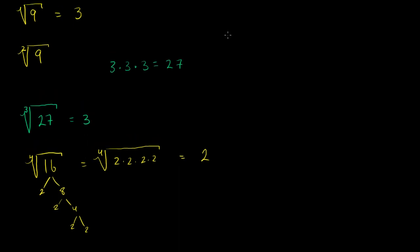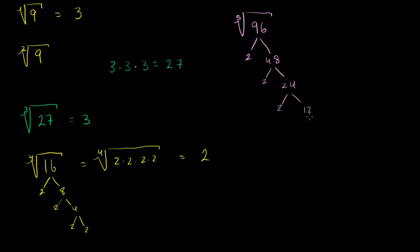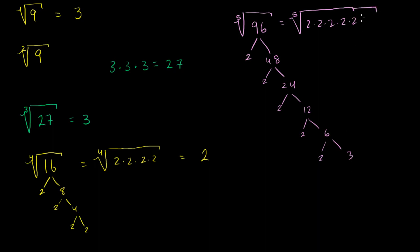We've simplified traditional square roots before; now we should be able to simplify radicals with higher power roots. Let's try to simplify the fifth root of 96. Let's factor 96: 96 is 2 times 48, which is 2 times 24, which is 2 times 12, which is 2 times 6, which is 2 times 3. So this is equal to the fifth root of 2 times 2 times 2 times 2 times 3 times 3.